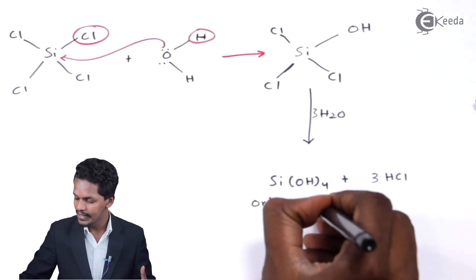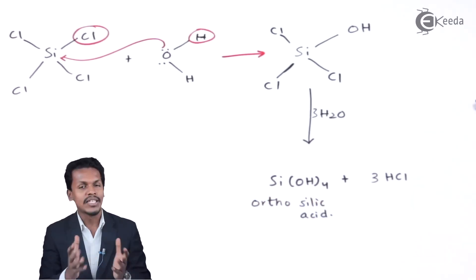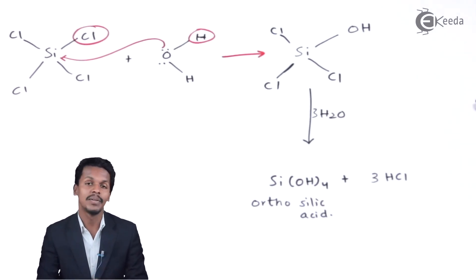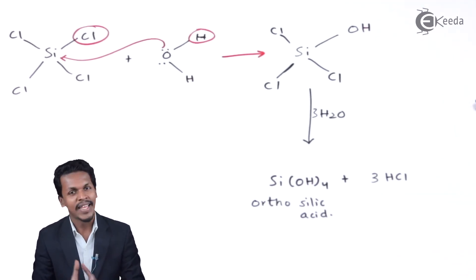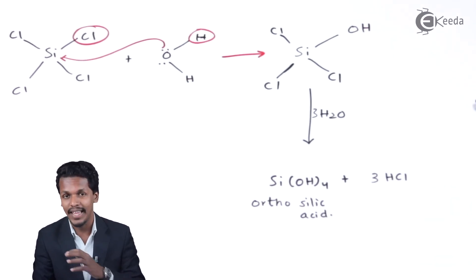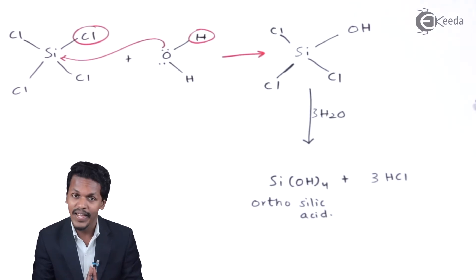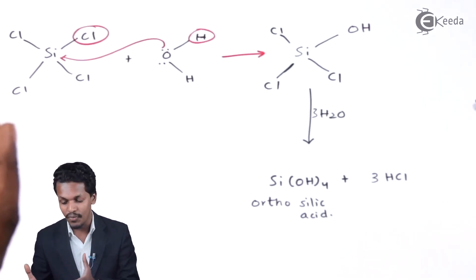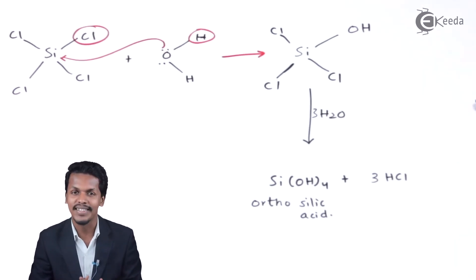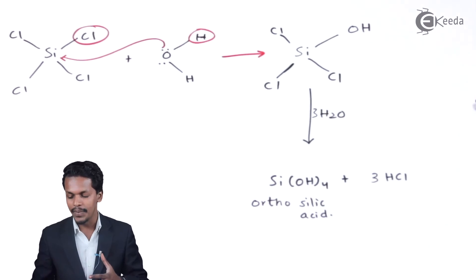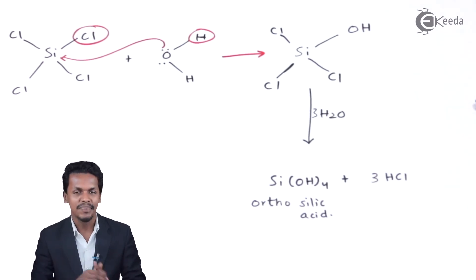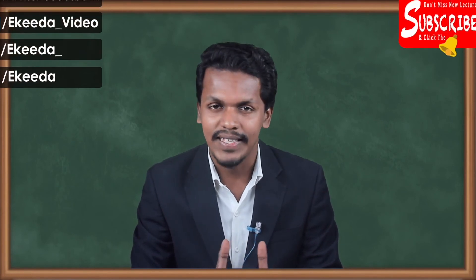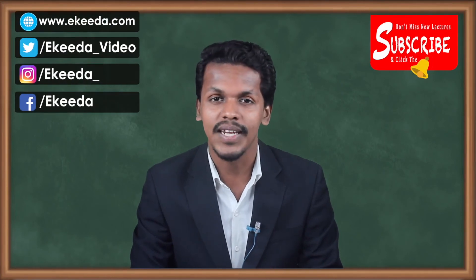The final product obtained is orthosilicic acid, Si(OH)₄, along with the release of HCl. This is how orthosilicic acid is prepared — it is another important compound of silicon. Comparing with silicon dioxide from the previous lecture, SiO₂ does not react directly with most acids or bases except HF and NaOH, and it does not react with water due to its crystalline structure. Thank you friends for watching. I hope you understood the properties of silicon tetrachloride easily. Please share this video and subscribe to the channel.